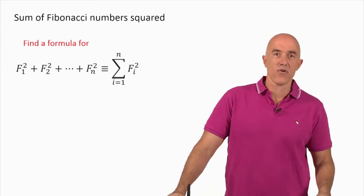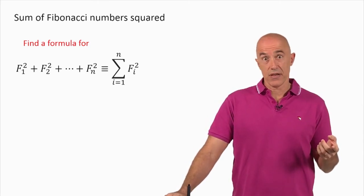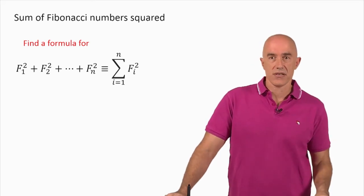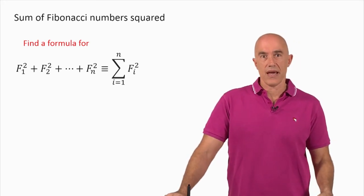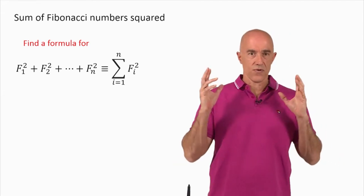So we're going to look for a formula for F1 squared plus F2 squared, all the way to F sub n squared, which we write in this notation, the sum from i equals 1 to n of F sub i squared. So we're going to look for the formula.